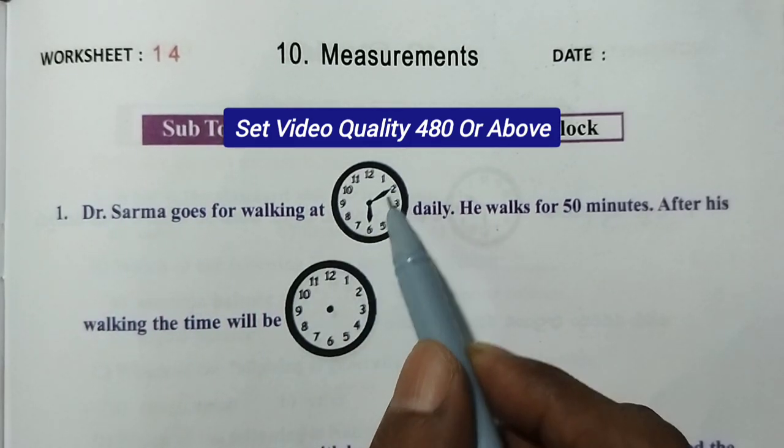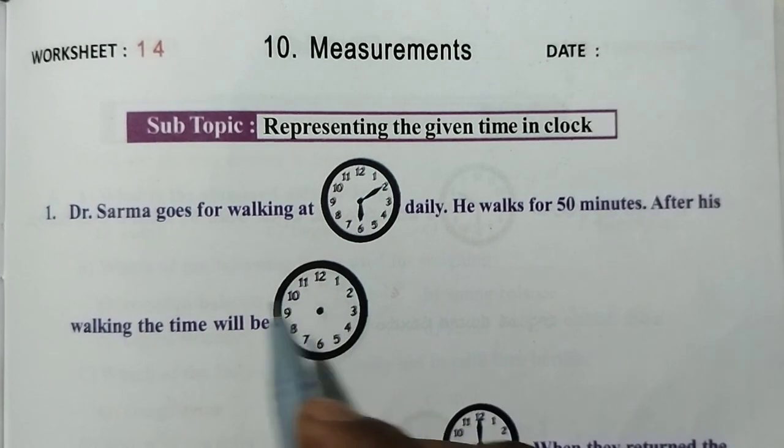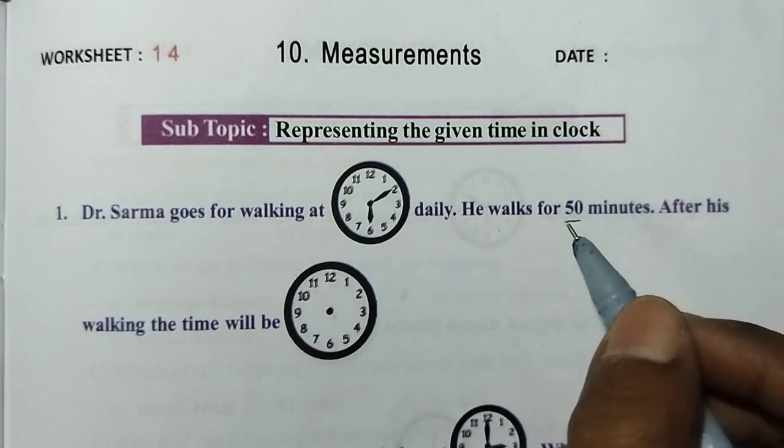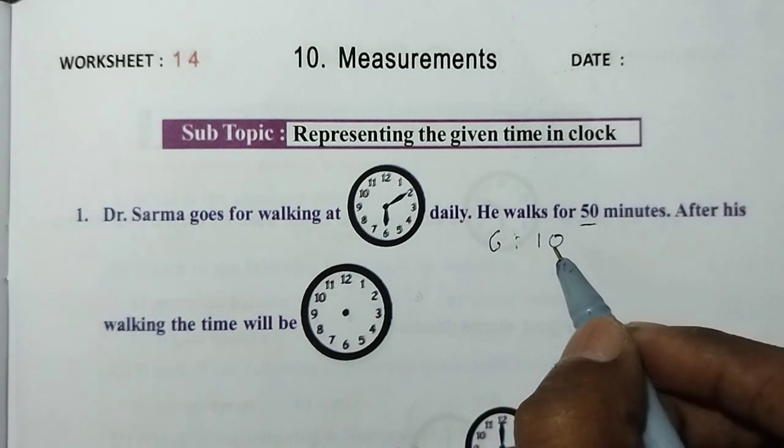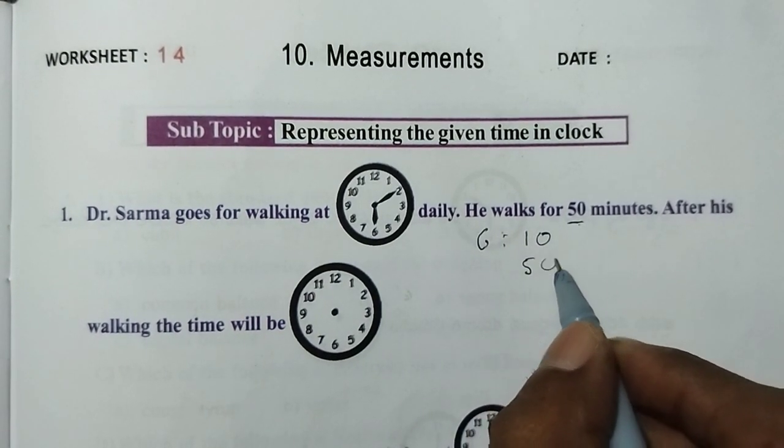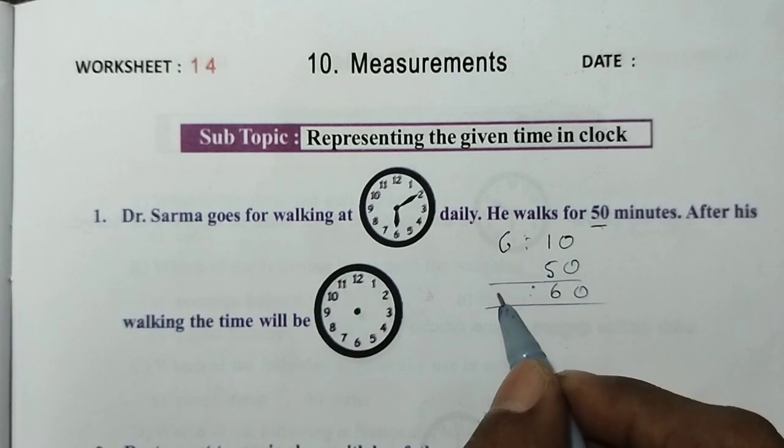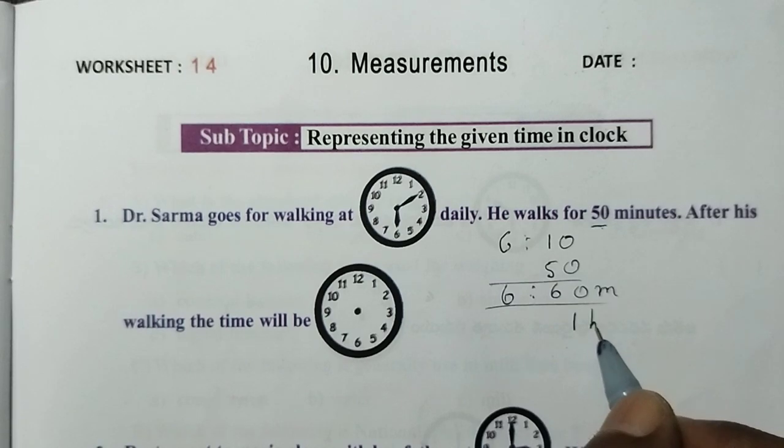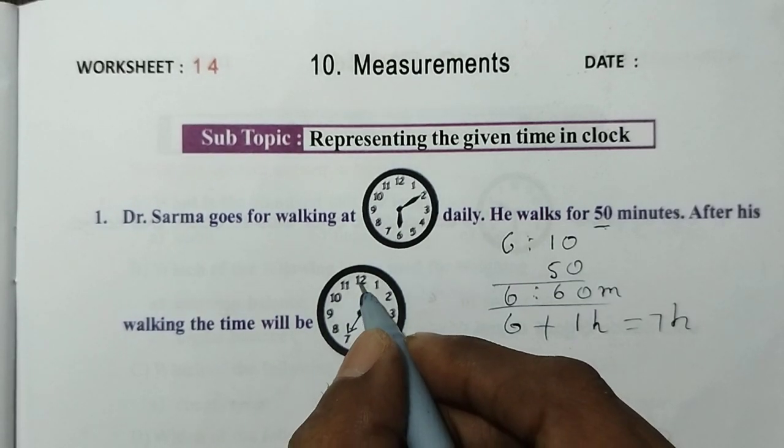Dr. Sharma goes for walking at 6:10 daily. He walks for 50 minutes. After his walking, the time will be - 50 minutes plus 10 minutes equals 60 minutes, which is 1 hour. So at 7 o'clock he comes back home. The small hand is at 7, the big hand is at 12.